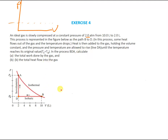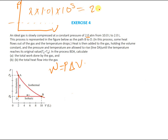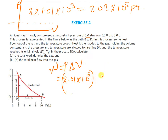In the process BDA, calculate the work done by the gas. The work done by the gas is given by W = P × ΔV. The pressure given is 2 atmospheres, which we convert to Pascals by multiplying by 1.01 × 10^5, giving us 2.02 × 10^5 Pascals — that is Newtons per meter squared.